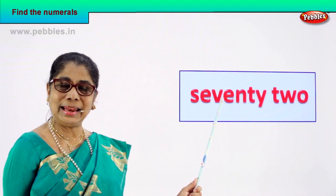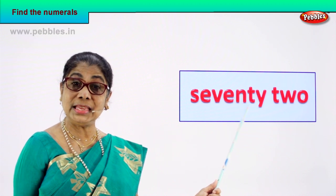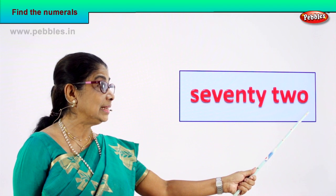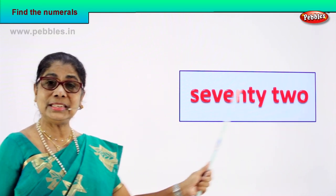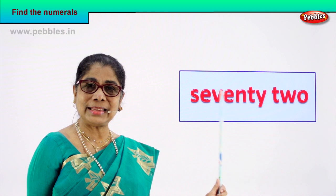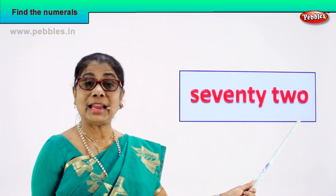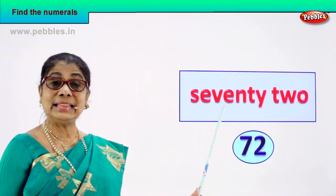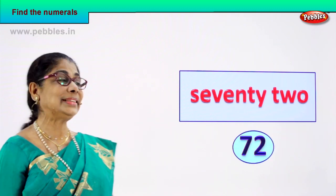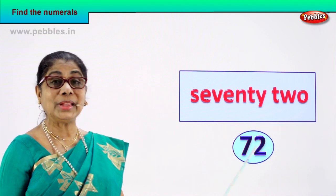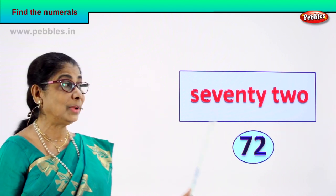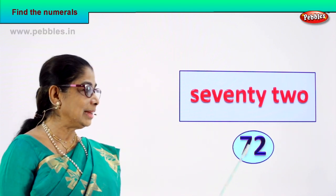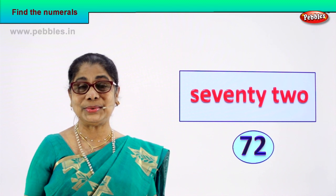S-E-V-E-N-T-Y, 70. T-W-O, 2. Seventy-two, 72. How do we write the numeral? Seven and two — 72. That is the numeral, and you learn to read the number name 72. Good.